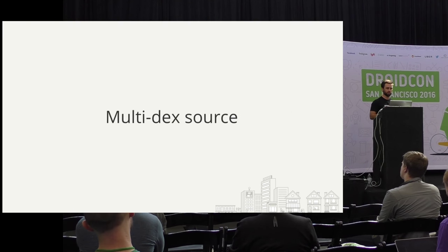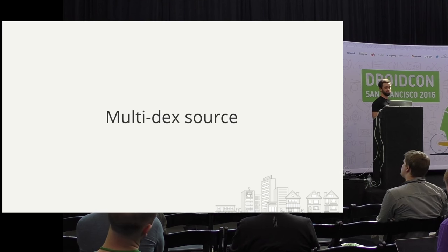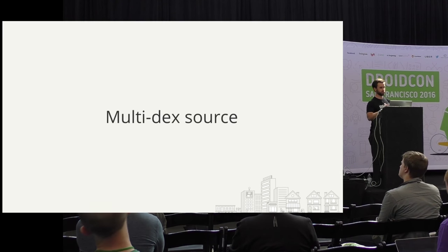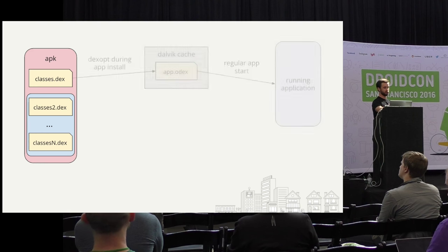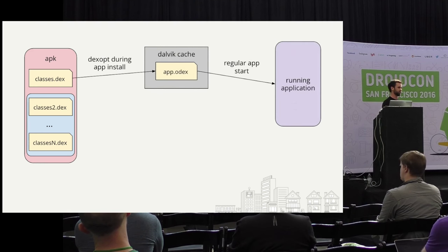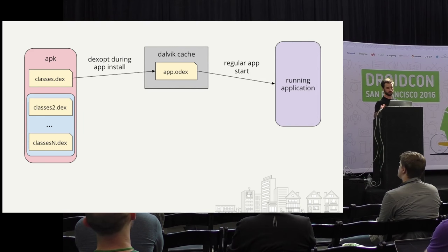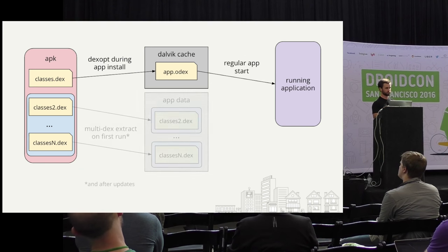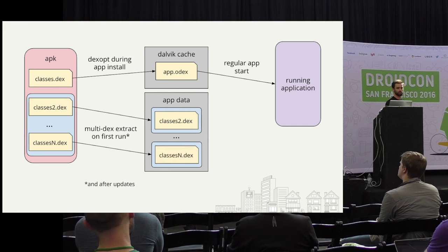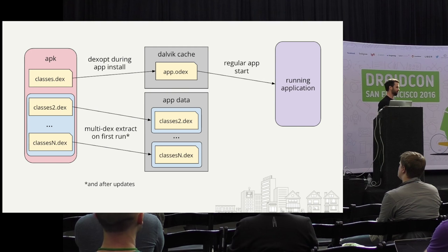Let's dive into the source and find out what's going on with the performance. Here's a brief overview of what's happening with Multidex. We have our APK on the device. At install time, DexOpt ran to set up an optimized dex file in our Dalvik cache. When we start up our app, that's where our code runs from. So what does Multidex do? We have these extra classes in our APK. The first time you run Multidex, as part of your application startup, it goes into the APK and extracts these additional dex files and puts them in your application data directory. This needs to happen any time your APK changes.